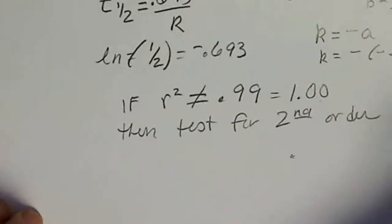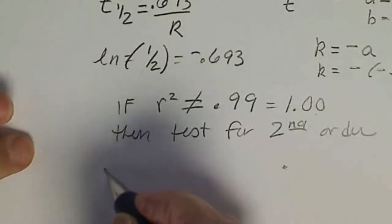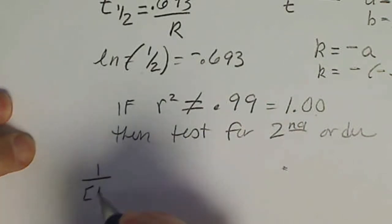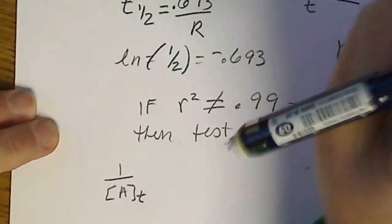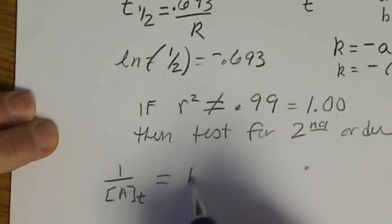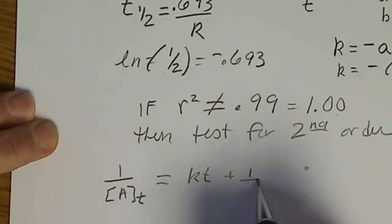And the 2nd order instantaneous equation is 1 over the concentration at any time T equals positive KT plus 1 over the initial concentration.